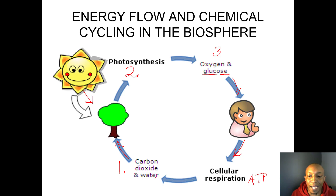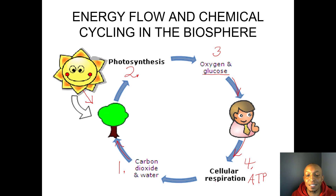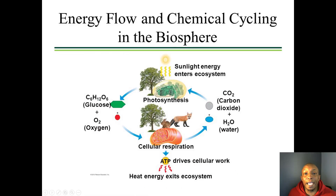Let's look at our steps. Step one: the plant or tree takes in carbon dioxide, water, and sunlight to go through photosynthesis and produce glucose, giving off oxygen as a byproduct. Step two: a person takes in that oxygen and glucose in the form of food to go through cellular respiration, which creates energy for the human in the form of ATP.